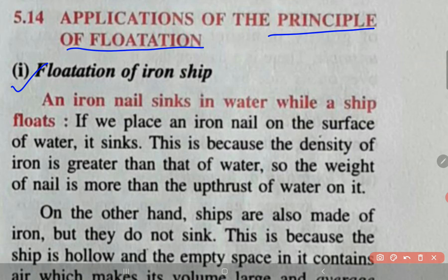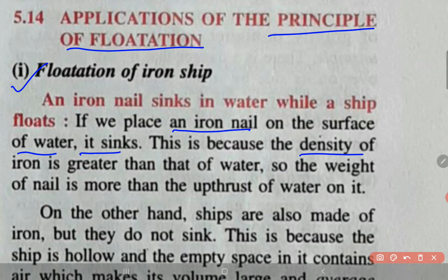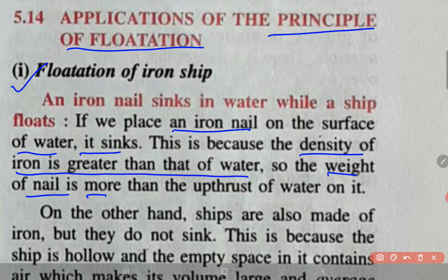An iron nail sinks in water while an iron ship floats. If you place an iron nail on the surface of water, it sinks basically because of two reasons. Number 1, the density of iron is greater than that of water. Number 2, the weight of the iron nail is more than the upthrust given by the water on the nail.